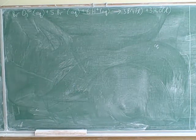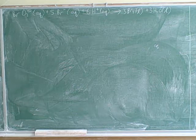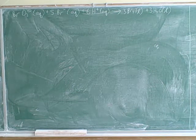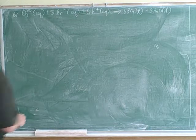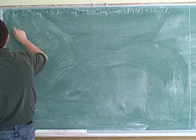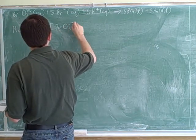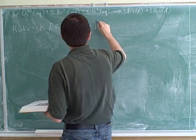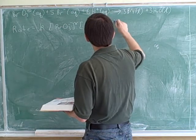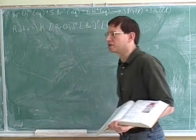Let's try working this out on paper. One thing that would be excellent to do is to start by just writing the general rate expression. Notice again we're not using the coefficients from the equation — we have to figure out the coefficients from the data.